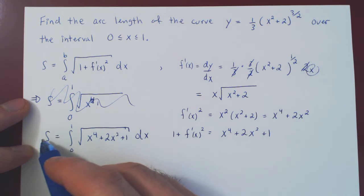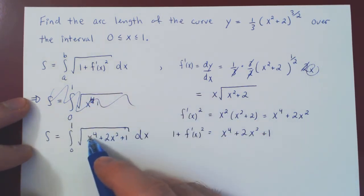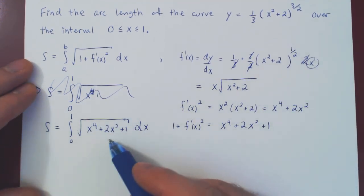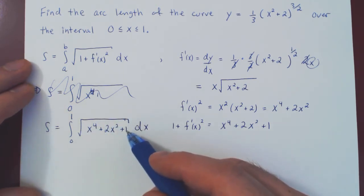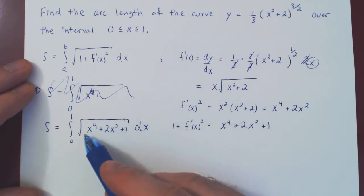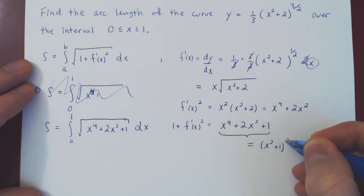And now we have to evaluate this integral, the square root of x to the 4 plus 2x squared plus 1. And this may look like a pretty nasty integral. How can we find the integral of the square root of a quartic polynomial? So it may look a little daunting. But if you look at this a little closer, x to the 4 plus 2x squared plus 1, this actually is a perfect square. x to the 4 plus 2x plus 1 is simply x squared plus 1 squared.